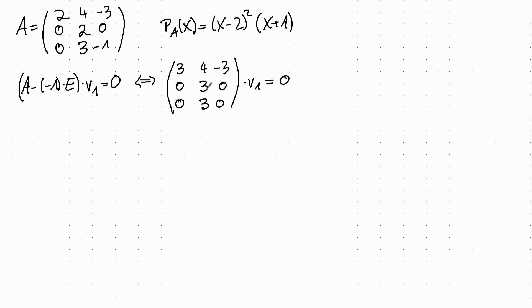So those two rows show us that the second entry of V_1 has to be 0. And then the first row shows us that the first entry minus the third entry is 0, so they have to be equal: 1, 1.